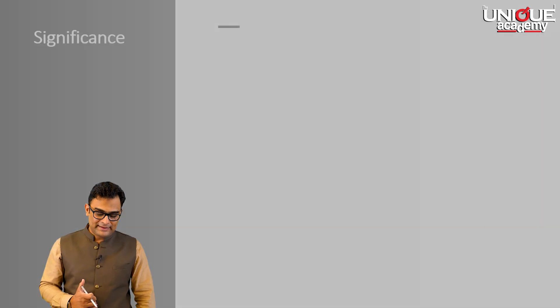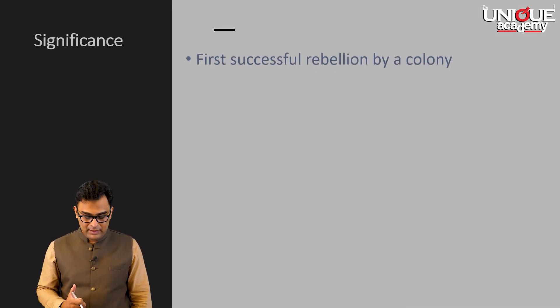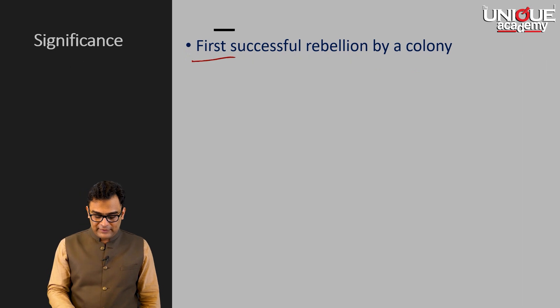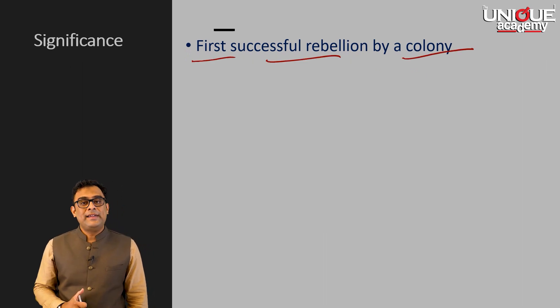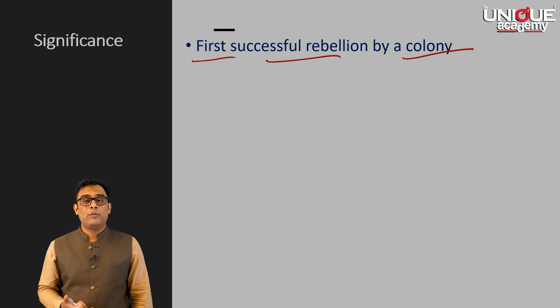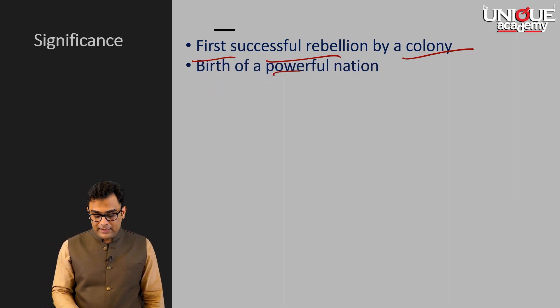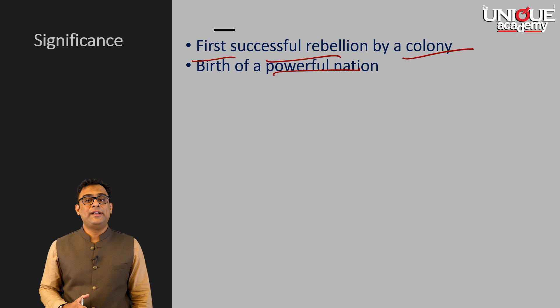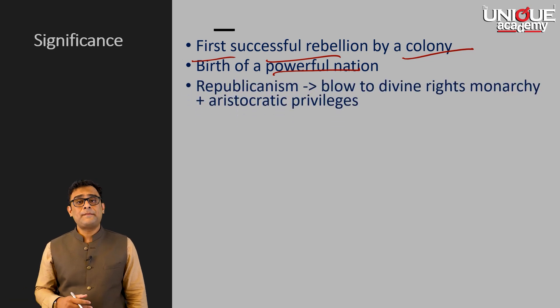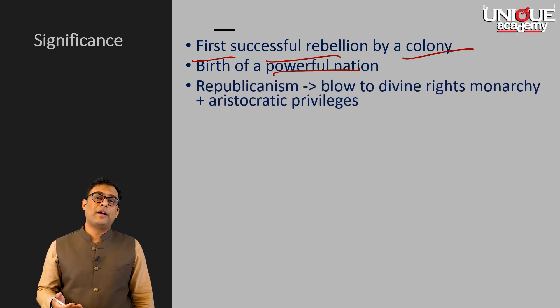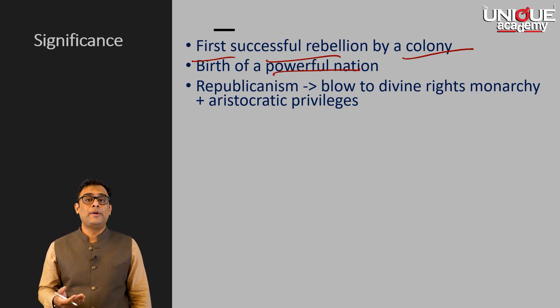Now let us see the overall significance of the American Revolution. First, it was the first successful rebellion by a colony, which naturally created a precedent that inspired many other colonies to rebel against their metropole. Second, it gave birth to a very powerful nation. In the years to come, America went on to become a superpower and especially after the Second World War, it has continued to influence the international geopolitical order.